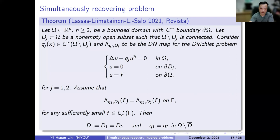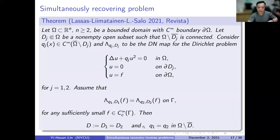Assume U equals zero on the boundary of D_j (making it a cavity) and U equals F on the boundary of Omega. We can measure everything on the outer boundary but not inside. With the same DN map on the outer boundary, for any sufficiently small smooth boundary data, we can recover D_1 equals D_2 and Q_1 equals Q_2 simultaneously — meaning both the cavity D and the coefficient Q in the annulus domain Omega minus D bar.